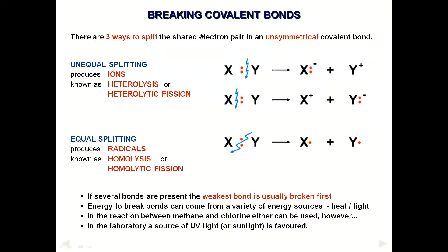Breaking covalent bonds — this is really important for this topic. There are three ways a covalent bond can break. If the bond is unsymmetrical, it can undergo unequal splitting: one atom gets both electrons and becomes negatively charged while the other becomes positively charged, or vice versa. This type of bond breaking is called heterolytic fission, and the products are ions — a positive ion and a negative ion.